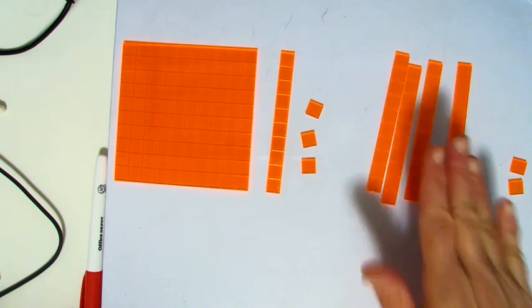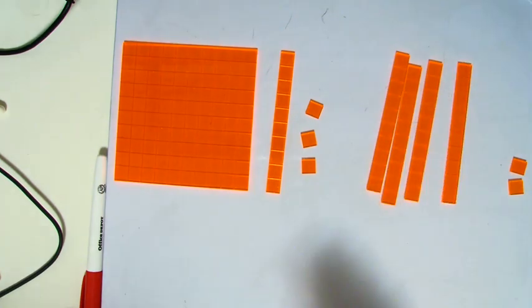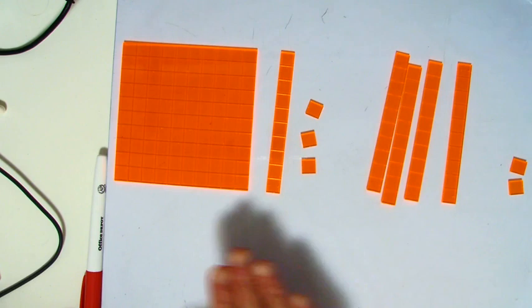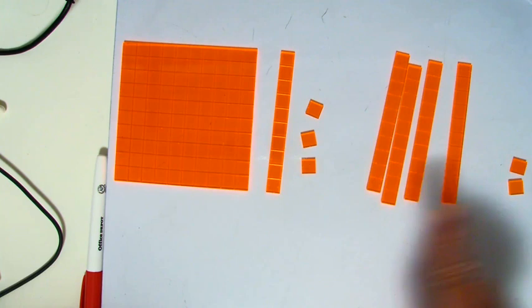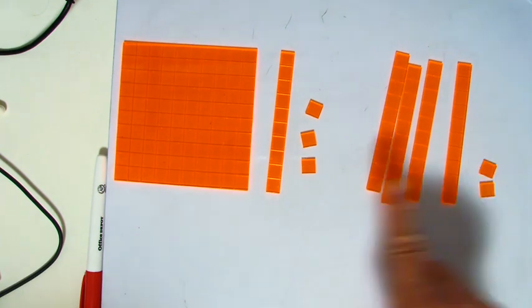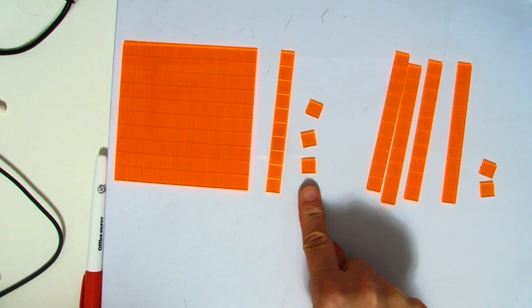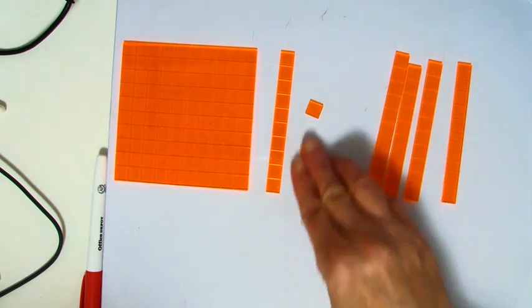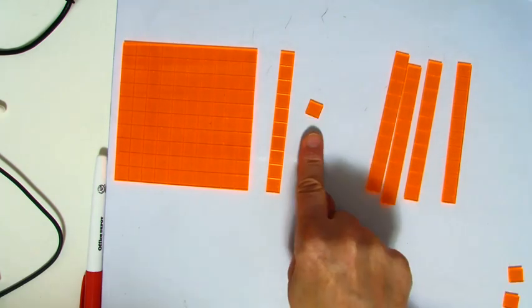So we've got 42, and I want to take that away from 113. Now, thankfully, I don't need to trade in a rod for ten, because I have enough ones on this side to take away two. So I'm left with one unit left.